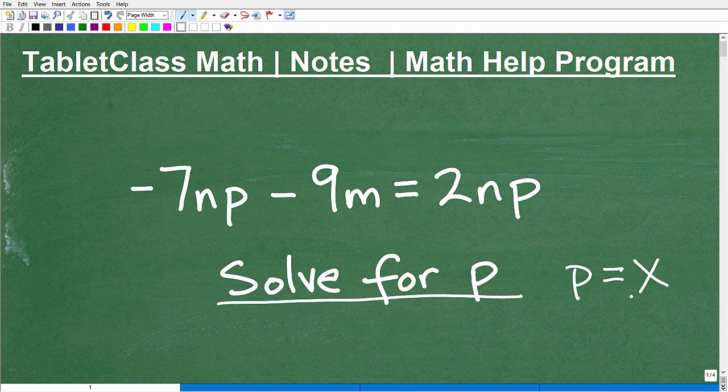Right? And this is an interesting problem because we have the variables p, we also have an n, and we also have an m. So this is an example of a problem for solving for the indicated variable where there's multiple variables going on in an equation.